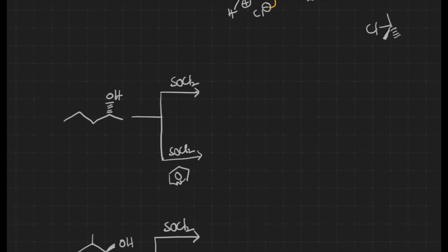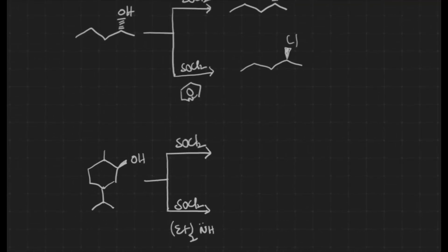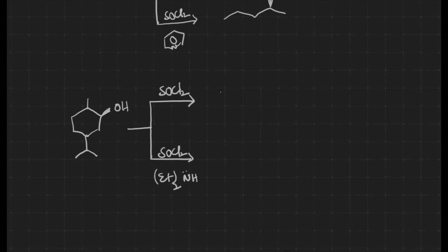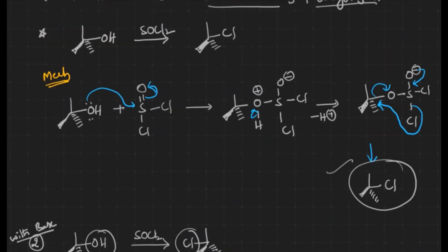With SOCl2 alone, retention product formation takes place — the nucleophile attacks from the same plane as the OH. But with a base, inversion product formation takes place — the nucleophile comes from the opposite plane to that of the leaving group. This is how the intramolecular nucleophilic substitution reaction takes place in the mechanism.